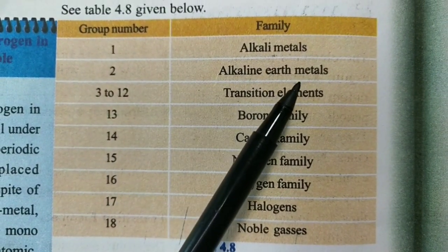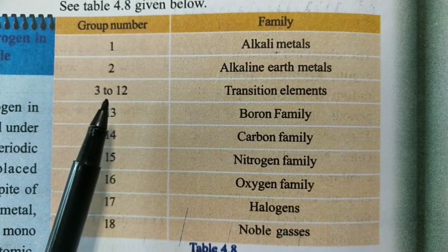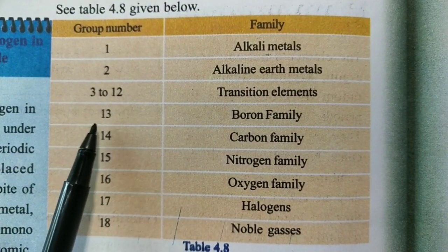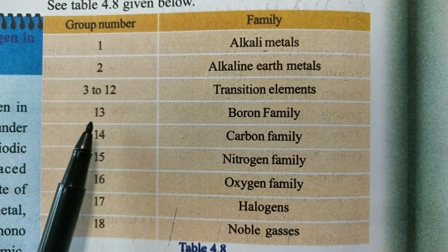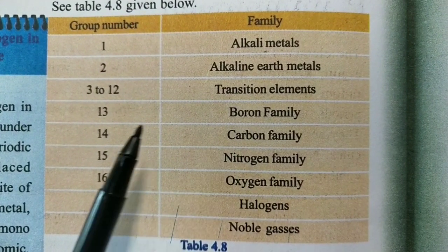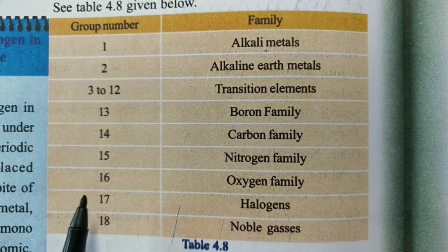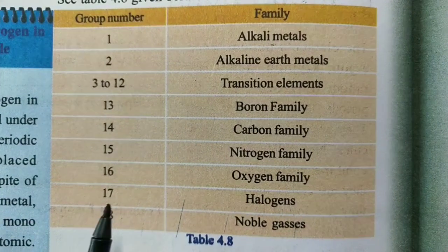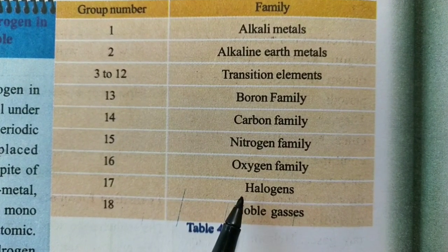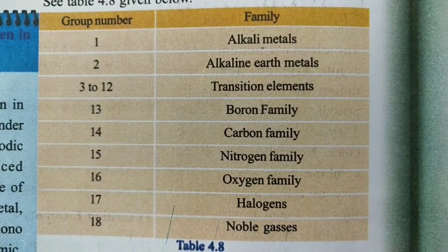Group 1 is Alkali metals. Group 2 is Alkaline earth metals. Groups 3 to 12 are Transition elements. Group 13 is the Boron family. Group 14 is the Carbon family. Group 15 is the Nitrogen family. Group 16 is the Oxygen family. Group 17 is Halogens. Group 18 is Noble Gases.